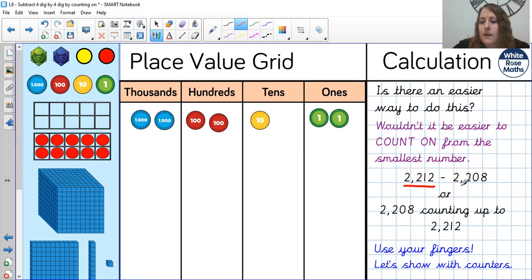Would it have been easier to do what I just did with the counters to exchange or to count on? So I'd start at my number takeaway, which is what I just did, or shall I start at the 2,208 and count up? So we do 2,208, 2,209, 2,210, 2,211 and 2,212. So I still want the same four answer, but I didn't have to do all that exchanging. Maybe a simpler way to do it.